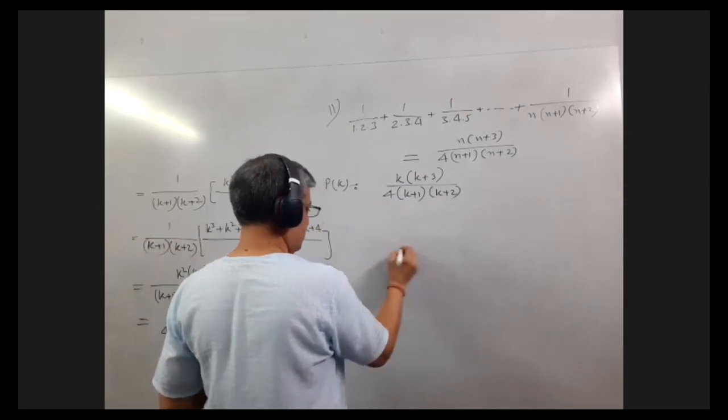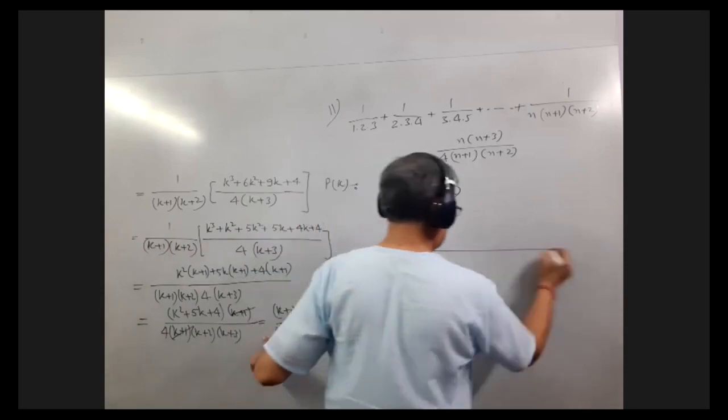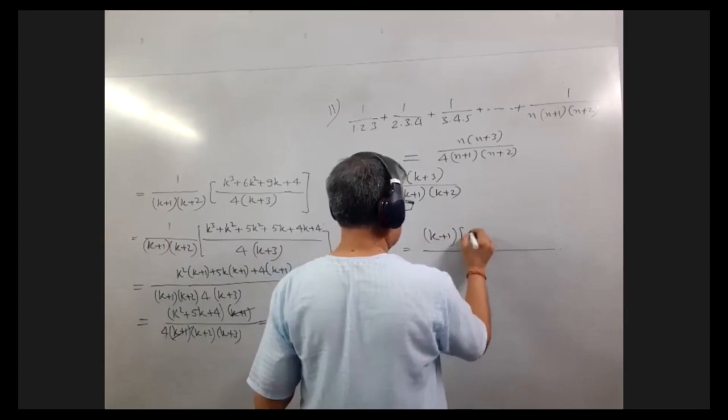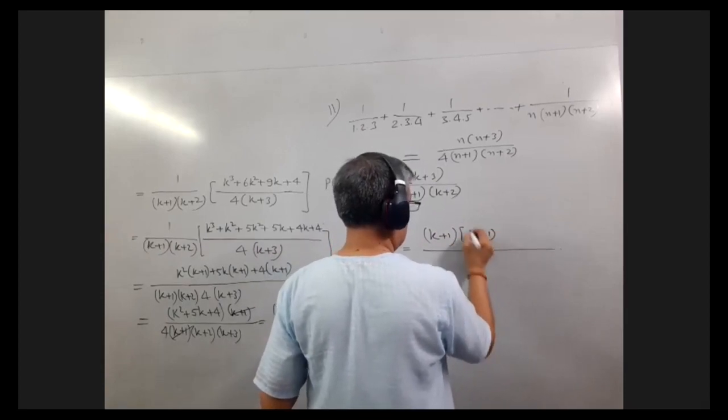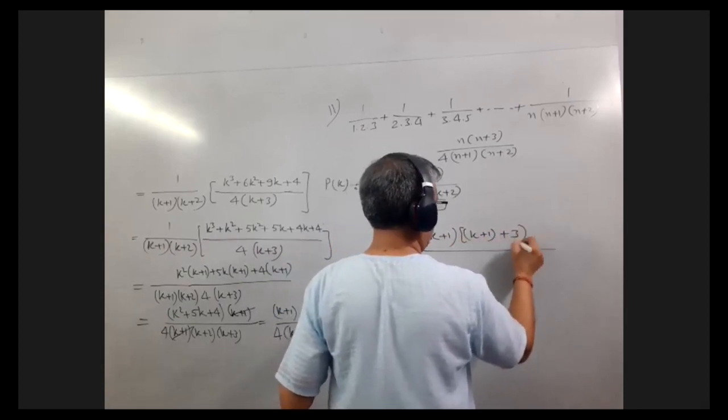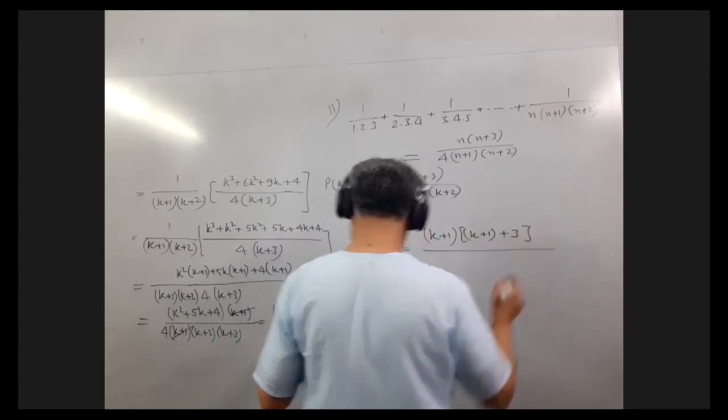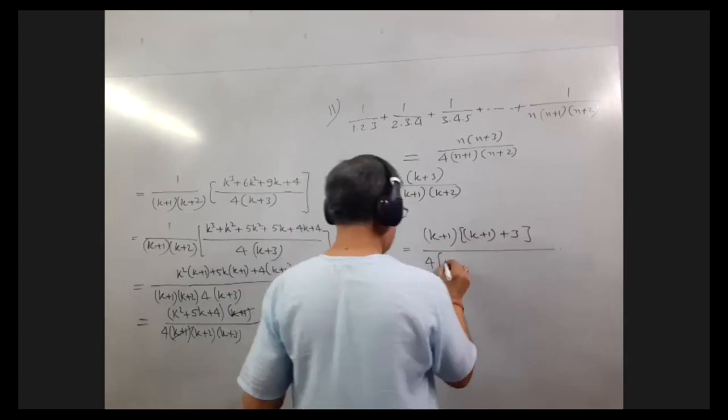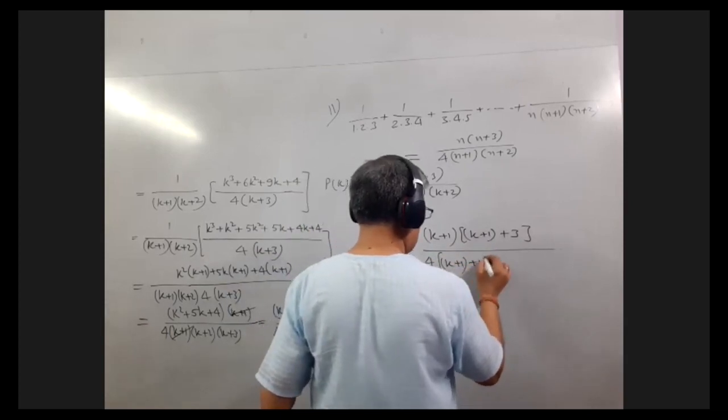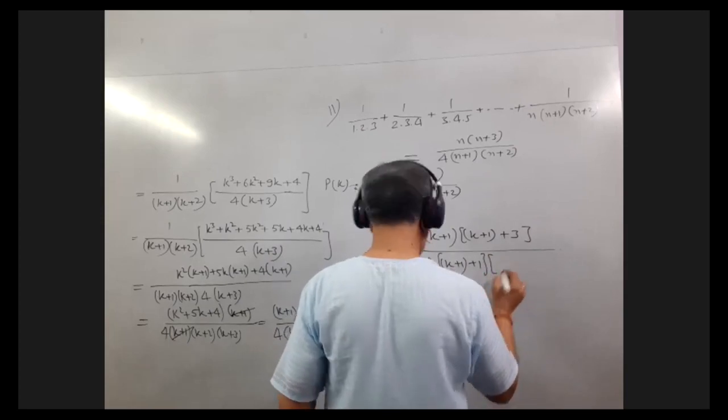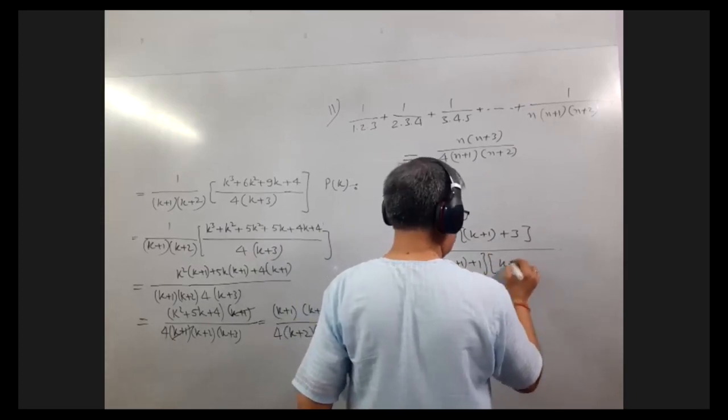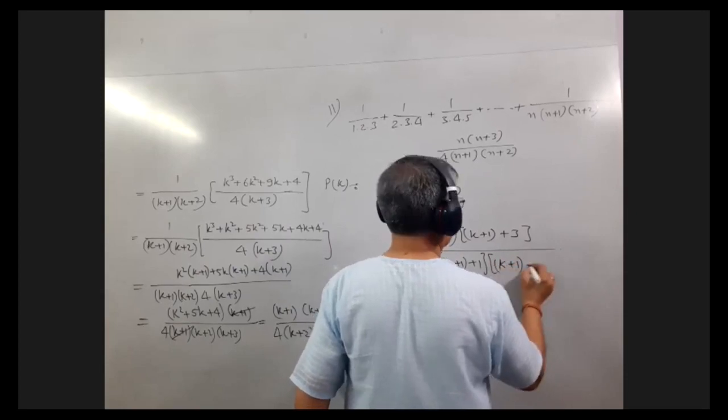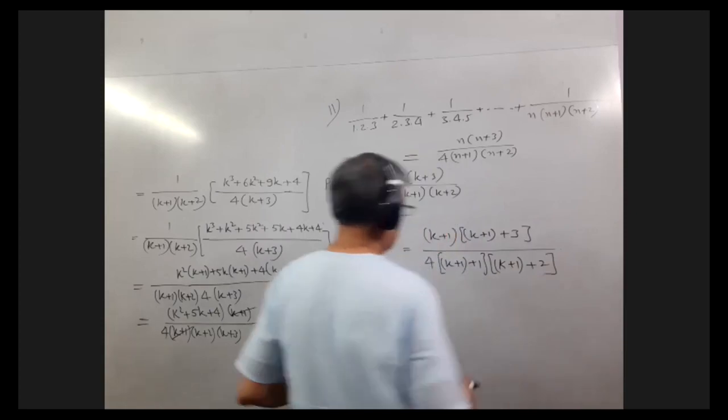So this is equal to k plus 1, k plus 1 plus 3. This is k plus 1 plus 1, and this is k plus 1 plus 2. So this form and this form perfectly match.